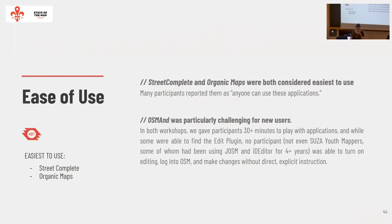Ease of use: Street Complete and Organic Maps were easiest to use — icons are really clear. OSM AND was very challenging and consistently ranked worst. Not even the SUSE youth mappers who have four years of experience were able to figure out how to turn on the editing program plugin. If working on OSM AND, something has to be done to make this easier for someone to just enter.